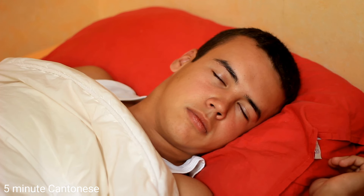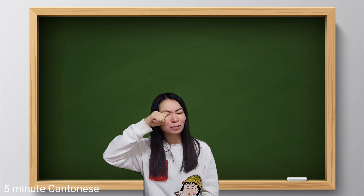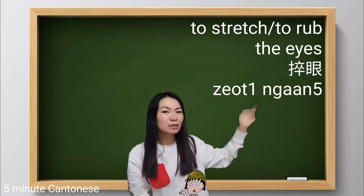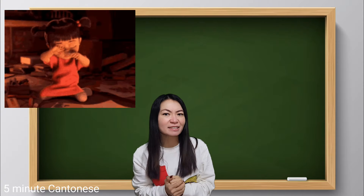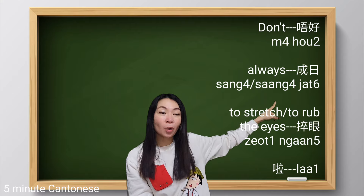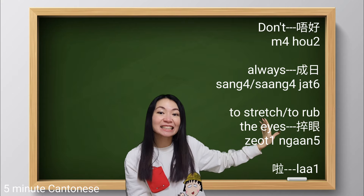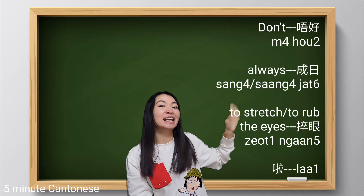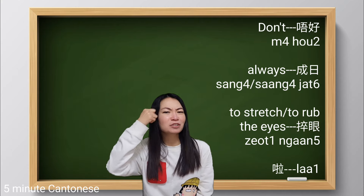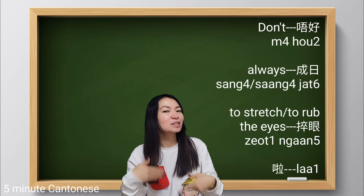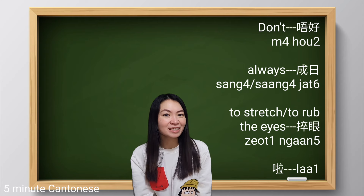For example, when we get up, how do you say to stretch our eyes? 出眼. For example, you're going to tell your kid: don't always stretch your eyes. 唔好成日出眼. 'Don't' is 唔好, 'always' is 成日 (you can also say 成), and 'stretch your eyes' is 出眼. Since it's a recommendation, you can add the ending particle 啦 — 唔好成日出眼啦.